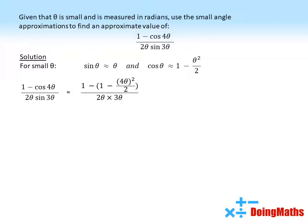We're now going to start simplifying this. So 4 theta all squared becomes 16 theta squared, and the 2 theta times 3 theta on the bottom becomes 6 theta squared.